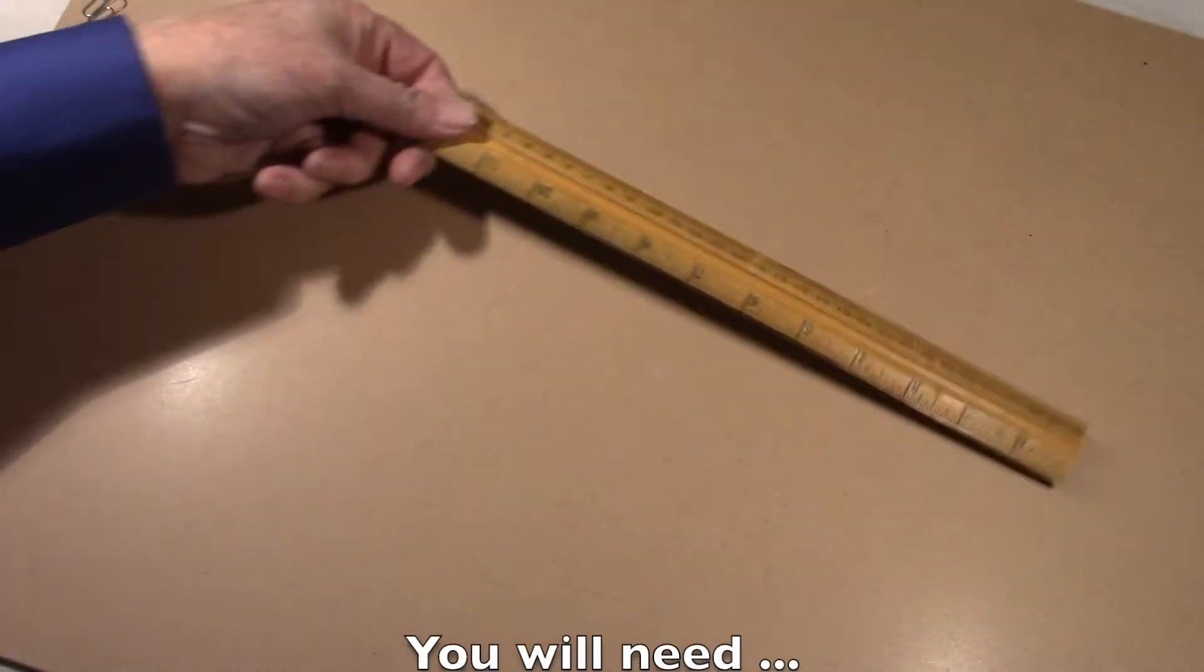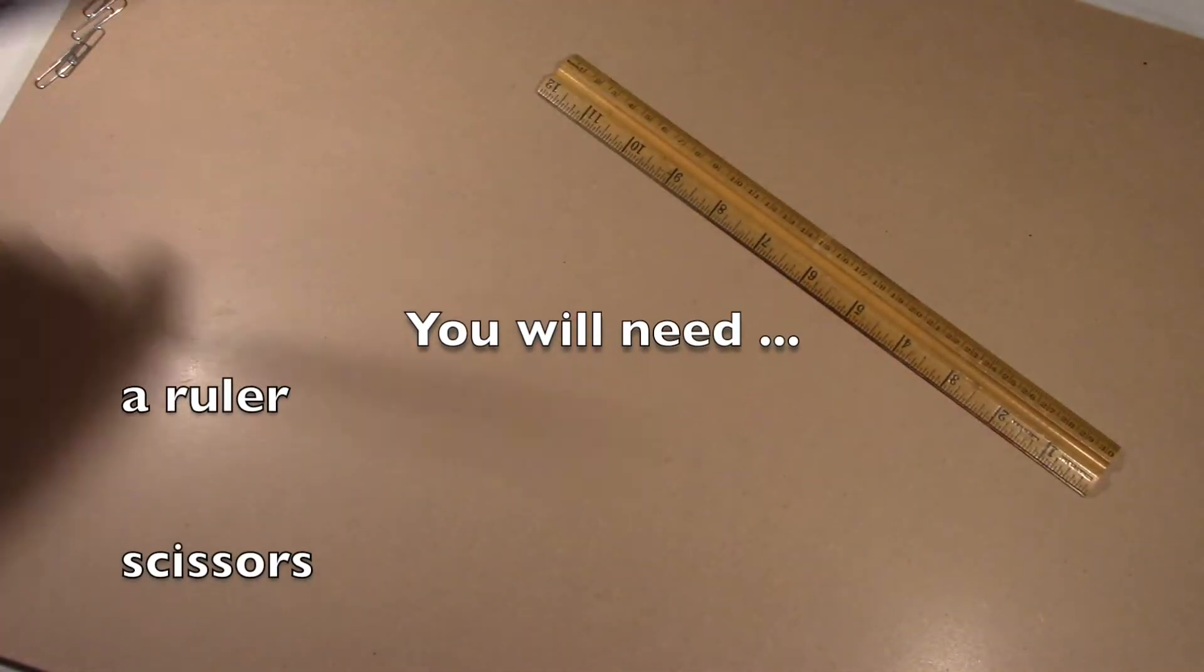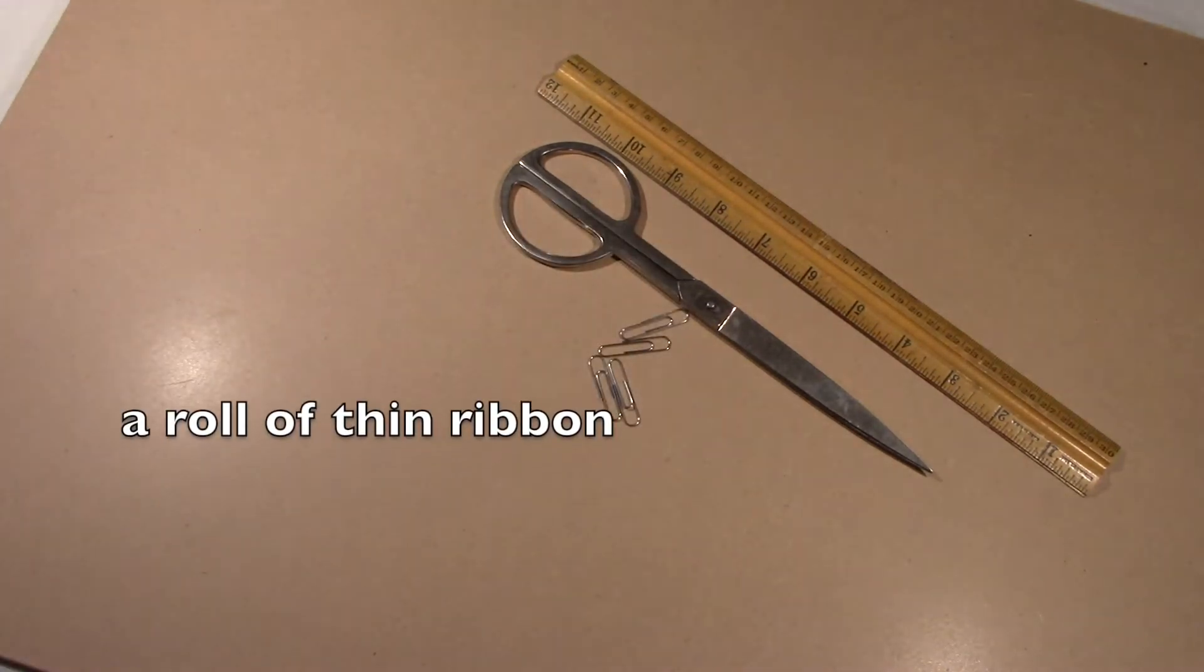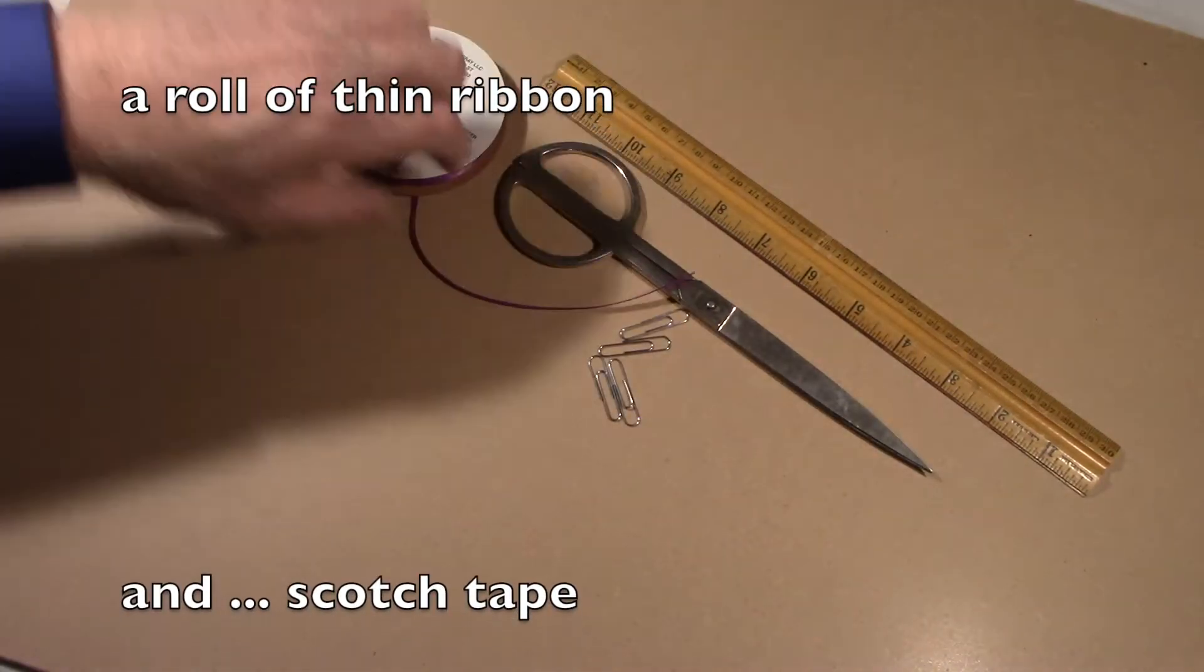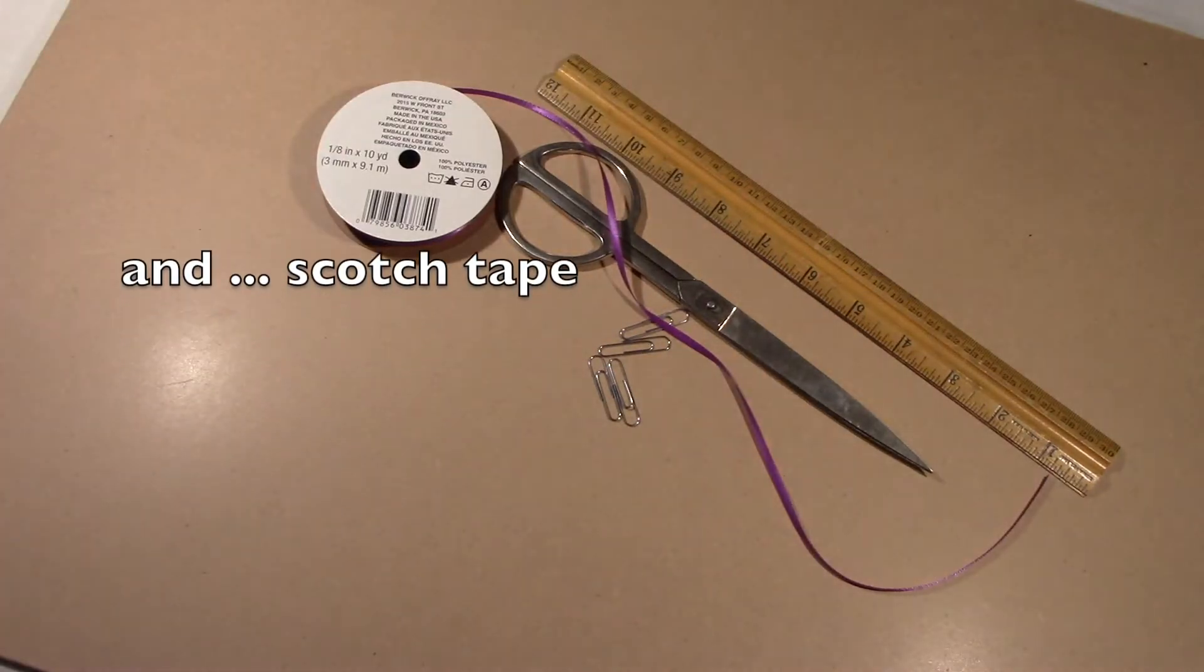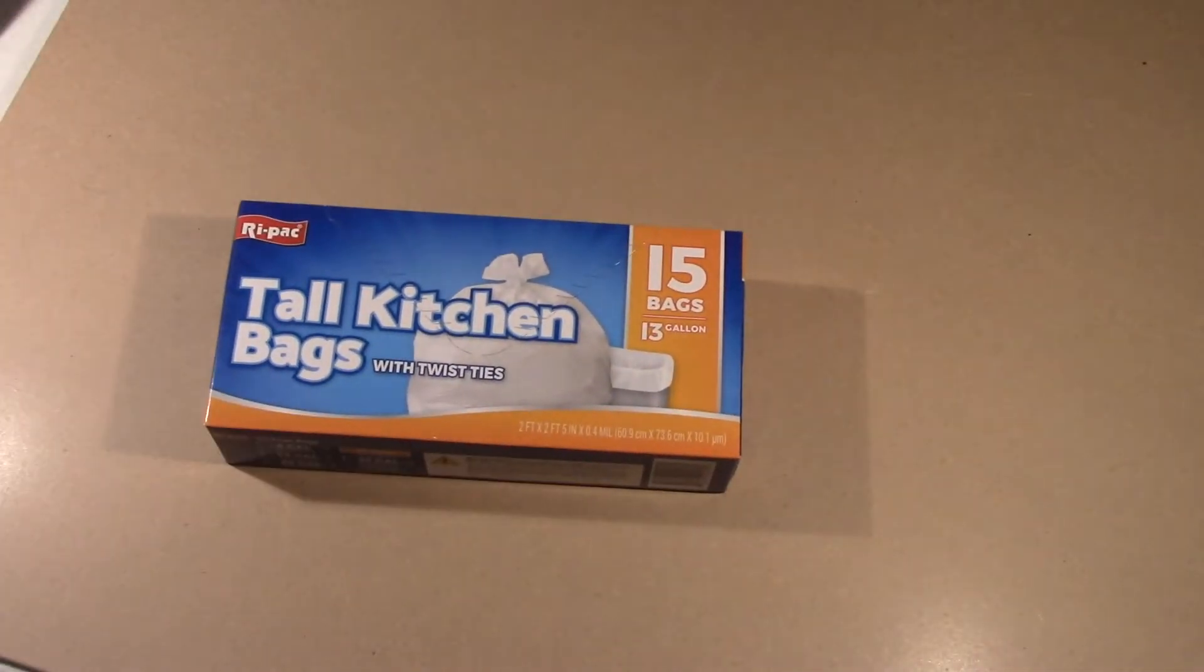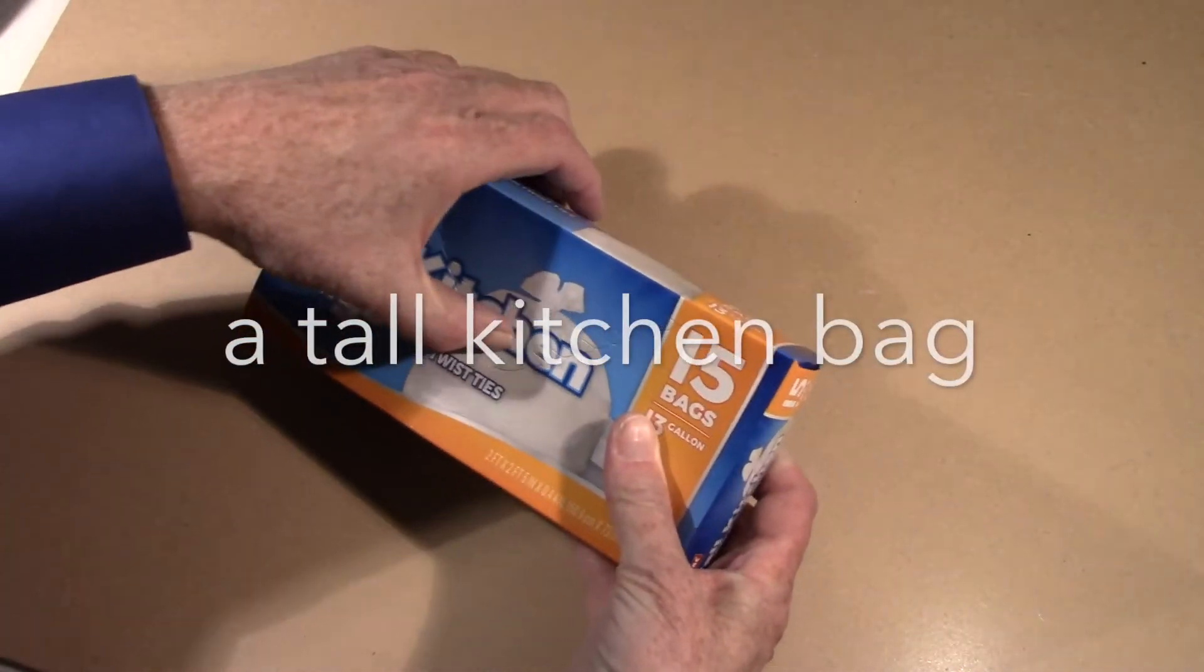You're going to need a ruler, scissors, paper clips, and a roll of thin ribbon. Plus, of course, your scotch tape. Next, you'll need tall kitchen bags. Just one of those is all you need.